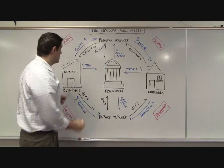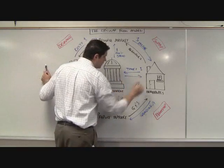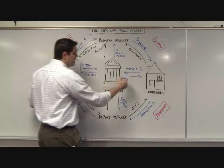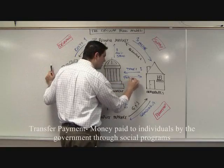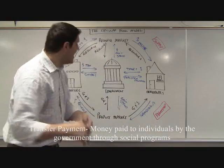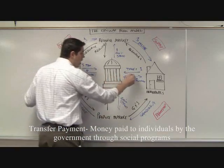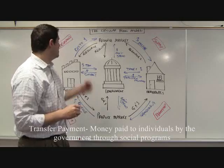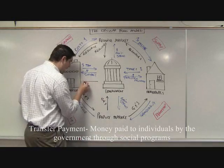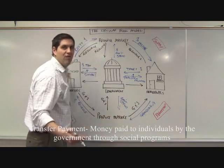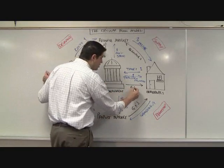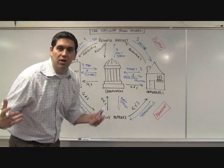Sometimes money goes out from the government — like subsidies to individual firms. This is called a transfer payment. Transfer payments are like Social Security — times when the government gives people money. The government also provides public goods like national defense, highways, and education. These are goods and services provided by the government. That's called the circular flow model.